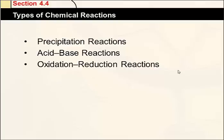Let's get into more of Chapter 4 and classifying chemical reactions a little bit differently. They can be classified as we did in regular chemistry: synthesis, double displacement, single displacement, decomposition, and combustion reactions. But those can also be classified into precipitation reactions, which were one type of double displacement, acid-base reactions, and oxidation-reduction reactions.